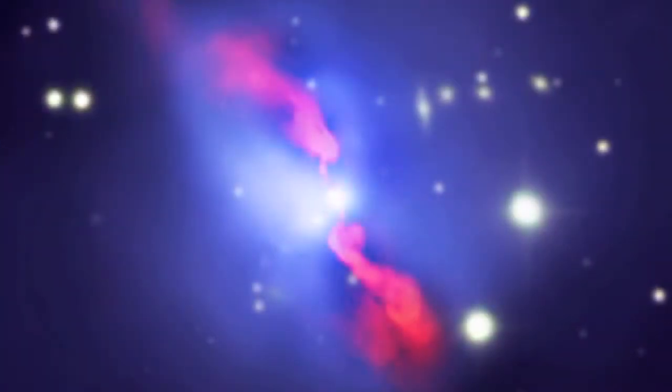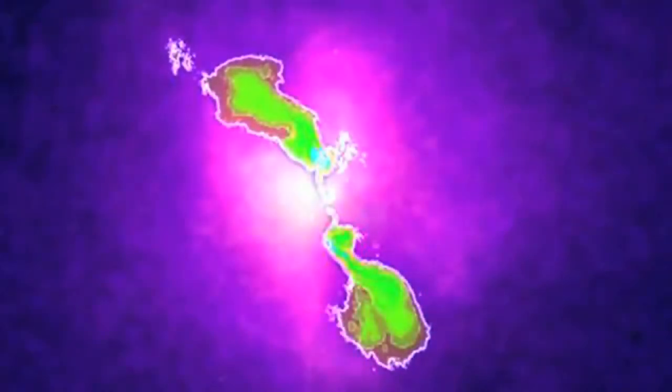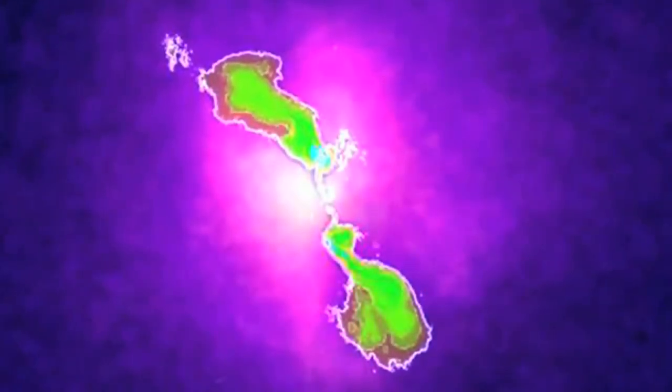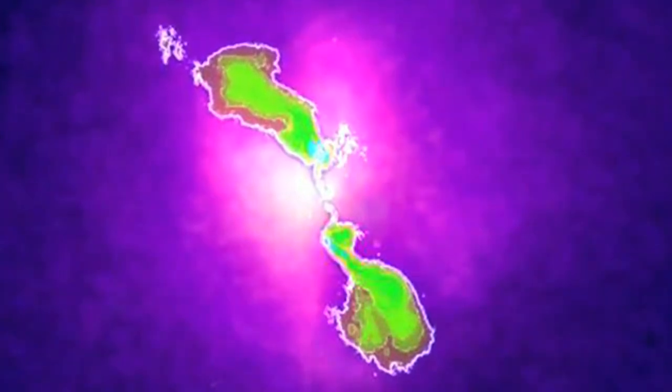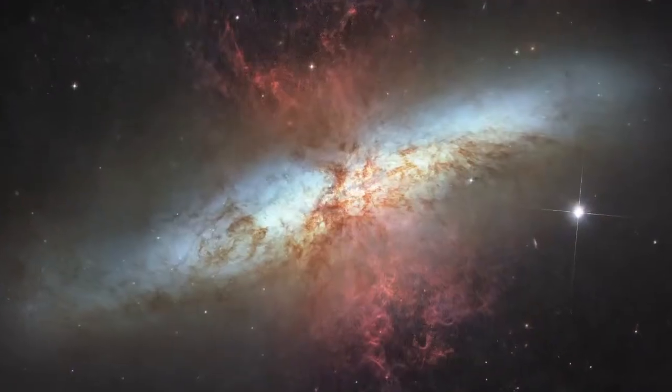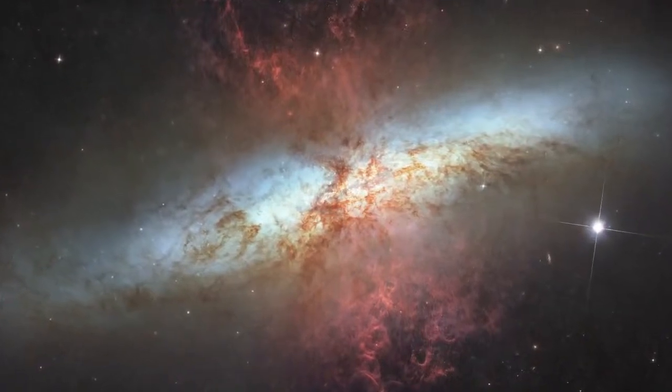This Chandra image of the Hydra A galaxy cluster shows the same immense hot cavities glowing in X-ray light, and a jet blasting out of its central galaxy. Gas along the edge of the jet contains high levels of iron, and other metals probably from supernova explosions in the center.